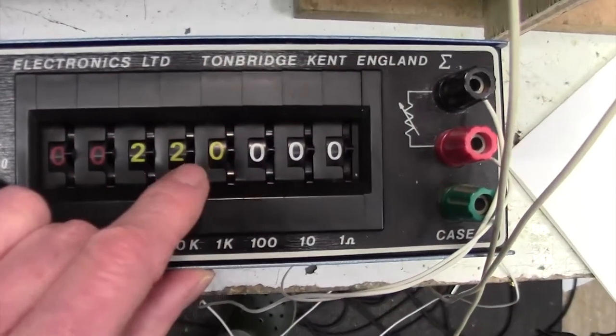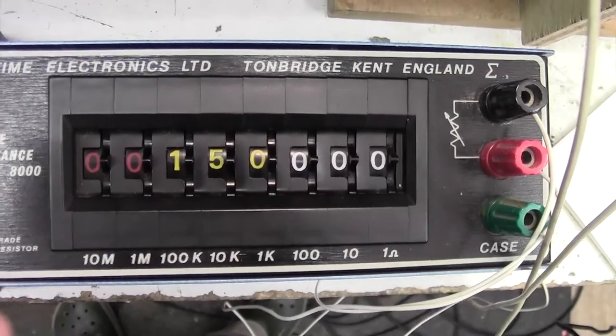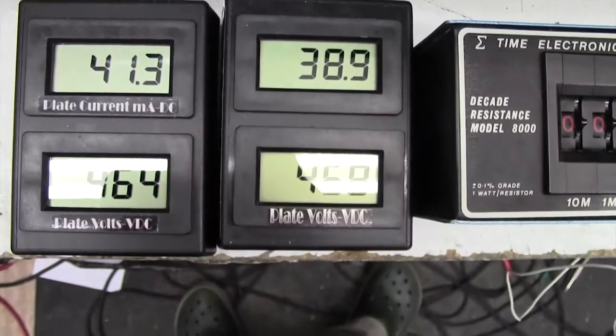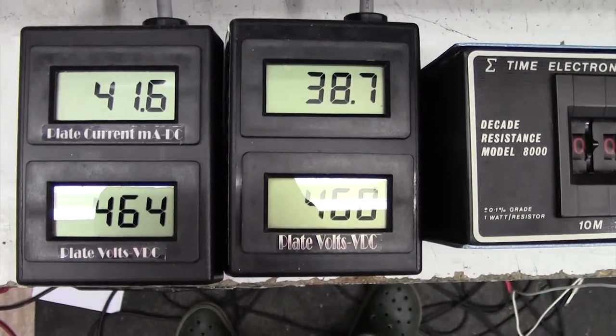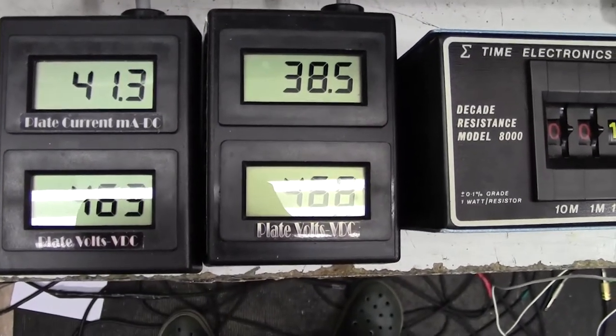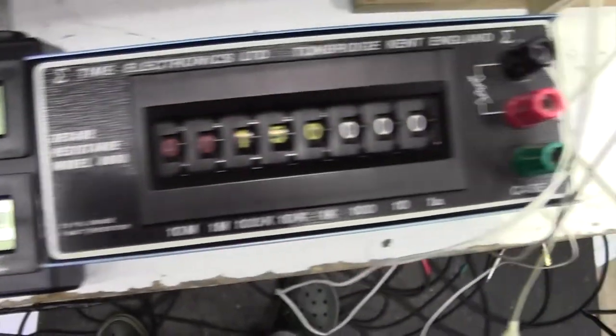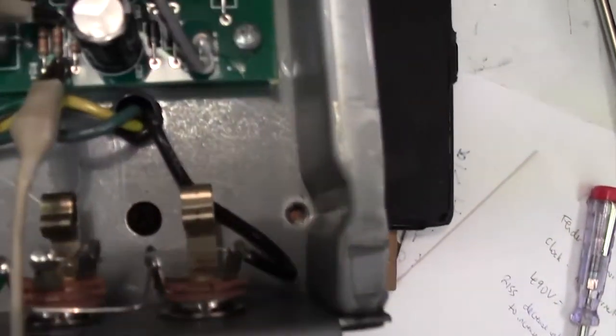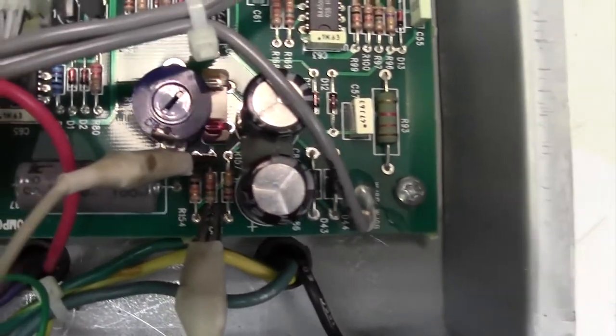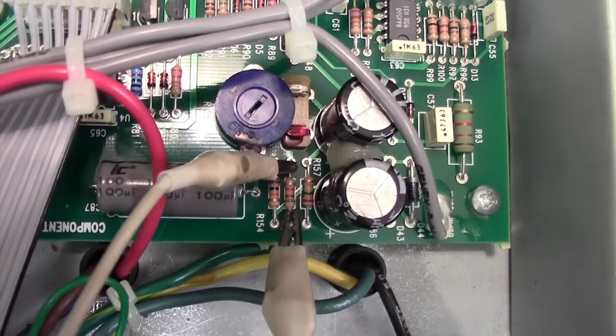Let's put 150k in. There we go, 150k. And I'm a bit happier with that. That's 40mA, give or take. So I'm now going to solder a 150k resistor across R155, and then we'll recheck the bias to make sure I've done the job correctly.